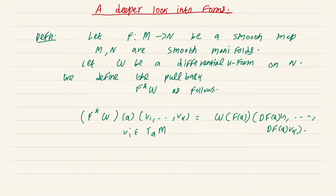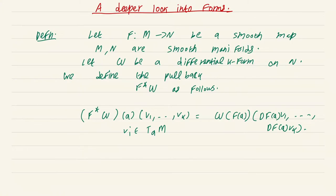So the pullback is defined by first transforming vectors v_1 to v_k in the domain to vectors in the codomain via the derivative map. Now, I had mentioned that we will consider only smooth forms in the future. So if omega is actually a smooth form, does it follow that f star omega is a smooth form? The answer to this question lies at the heart of what we want to achieve in this video: to make the definition of smoothness of a form on a manifold a workable definition.